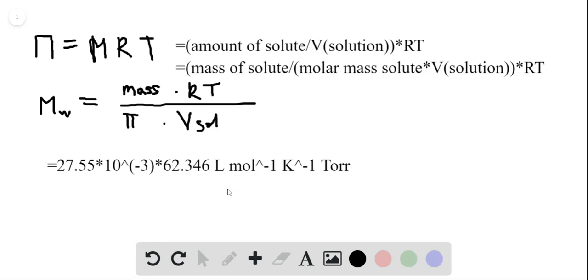Okay, so this is our universal gas constant. The next value is the temperature, which we have at 25 degrees Celsius.